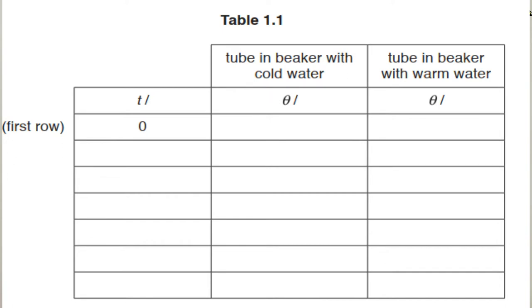Record the temperature theta of the water in the boiling tube and immediately start the stopwatch. According to the table, record the temperature theta of the water in the boiling tube at times 30, 60, 90, 120, 150, and 180 seconds. Use the first and second columns.